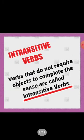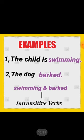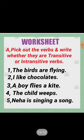Now, what are intransitive verbs? Verbs that do not require objects to complete the sense are called intransitive verbs. Let's understand with examples: 'The child is swimming' and 'The dog barked.' The actions performed by the verbs 'swimming' and 'barked' do not require objects to convey the sense — their meanings are clear without any object. So here, 'swimming' and 'barked' are intransitive verbs.